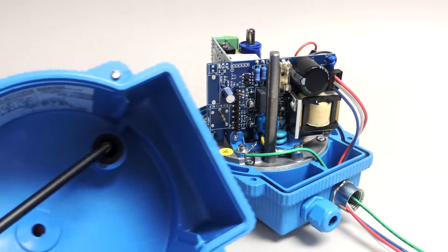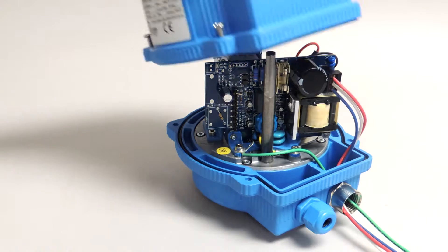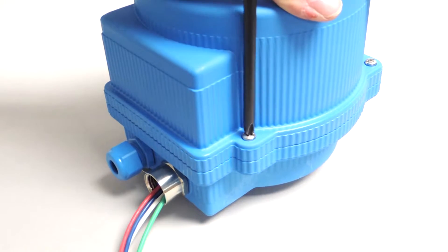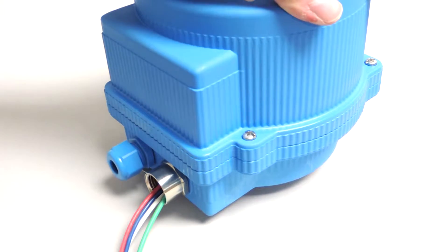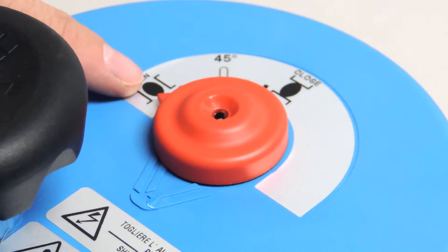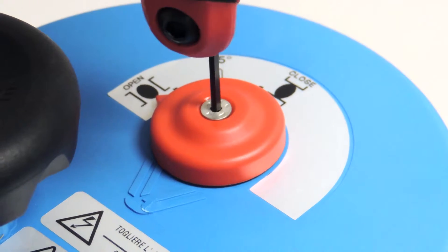Make sure that the manual shaft lines up with the hole in the outer shell and put the shell back onto the unit. Reattach the four screws. Put back the red indicator dial, making sure that it is pointing between the open and closed positions to ensure accurate readings during operation.